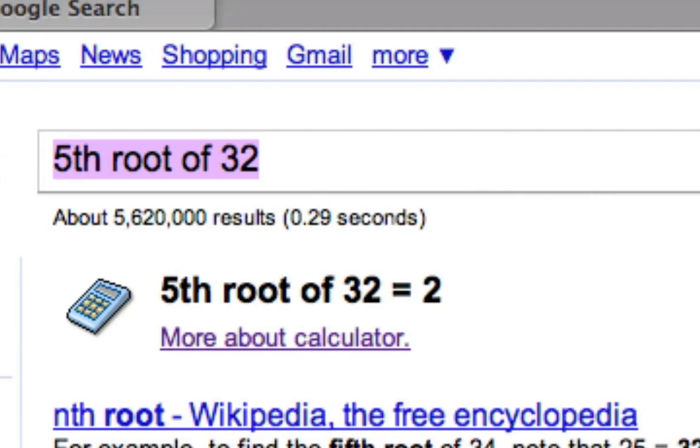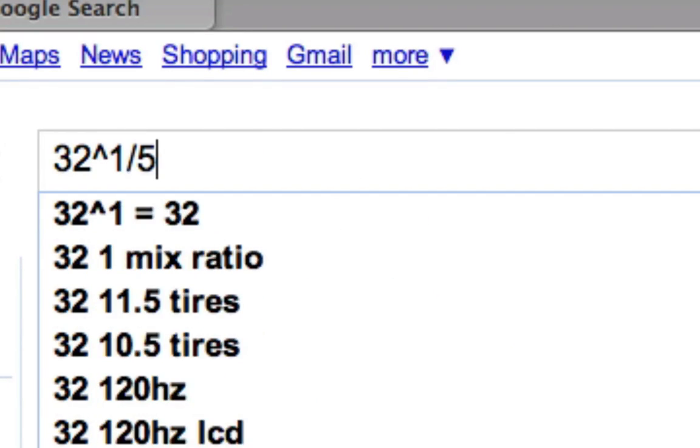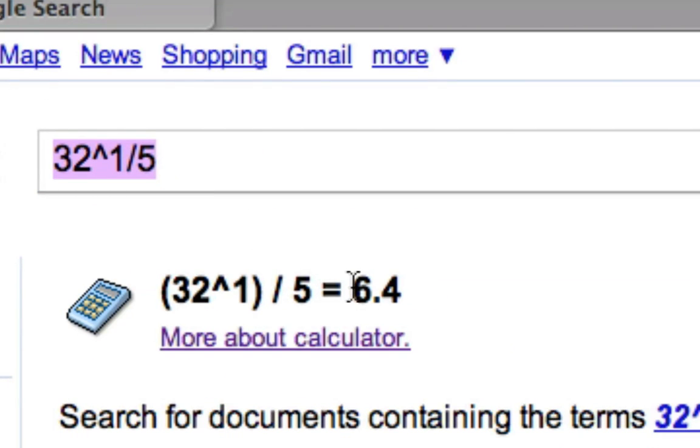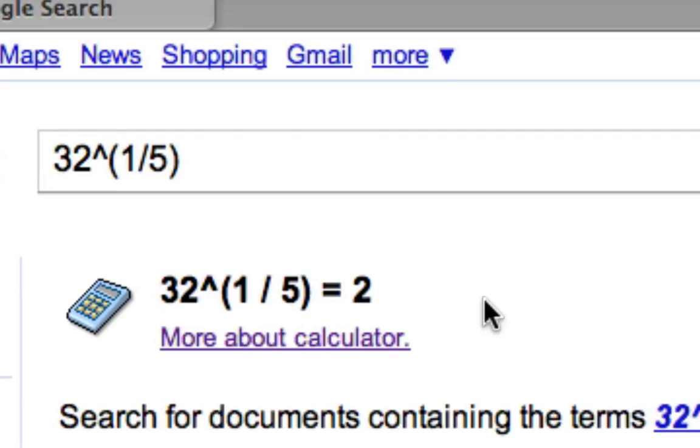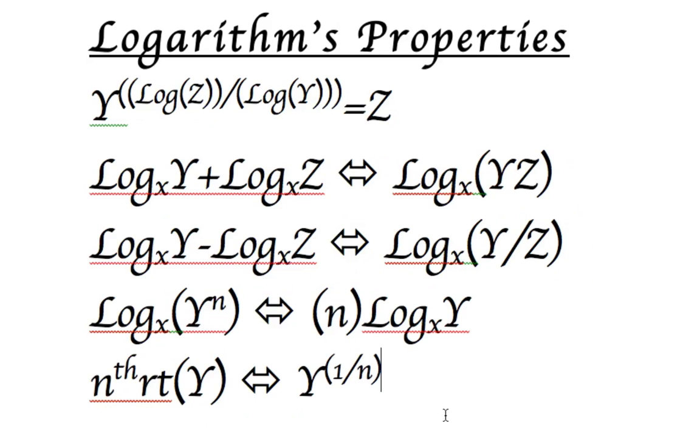and if you were to say, 32 raised to the one over five, sorry, you gotta have parentheses, because otherwise I was raising to the one and divide by five. You get two. So that's good. That's a good thing to note.